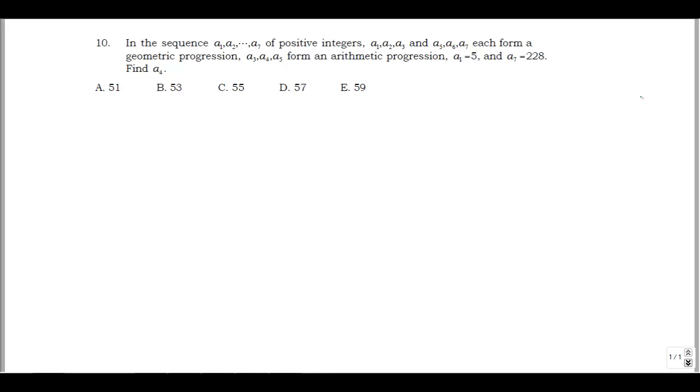So this is problem 10 from the Spring 25 Amatic Student Math Lead Contest. The question says, in the sequence a1, a2, up to a7 of positive integers, a1, a2, a3, and a5, a6, a7 each form a geometric progression. a3, a4, a5 form an arithmetic progression, and we have a1 equals 5 and a7 equals 228. We're supposed to find a4.